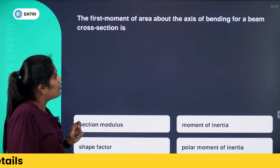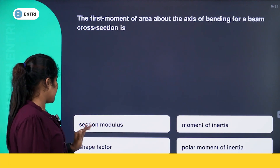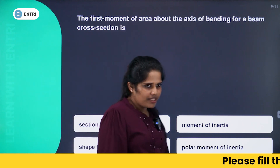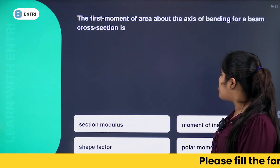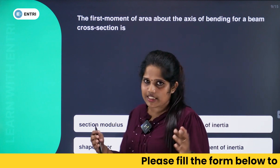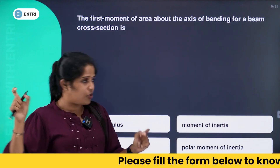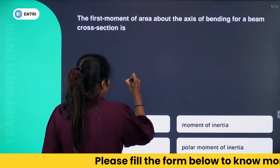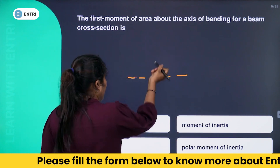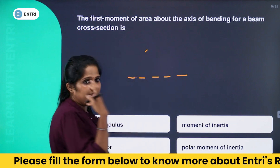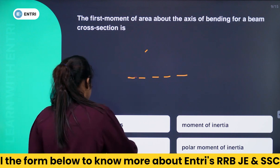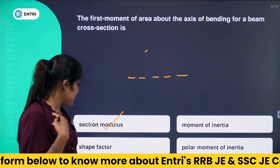Next question: the first moment of area about the axis of bending for a beam cross section is — Section modulus, Moment of inertia, Shape factor, or Polar moment of inertia? If we have a cross section and place it on the axis of bending, the first moment of area about that axis is the section modulus. The second moment of area is the moment of inertia.